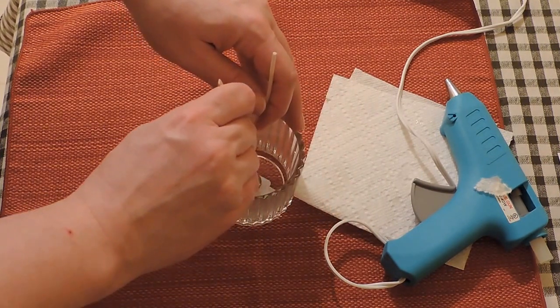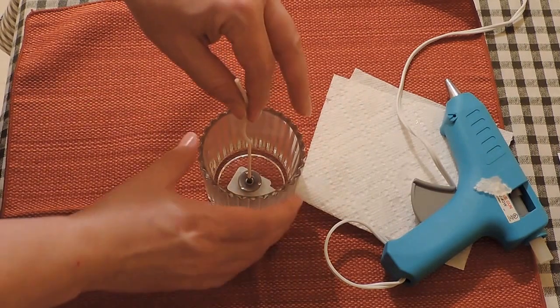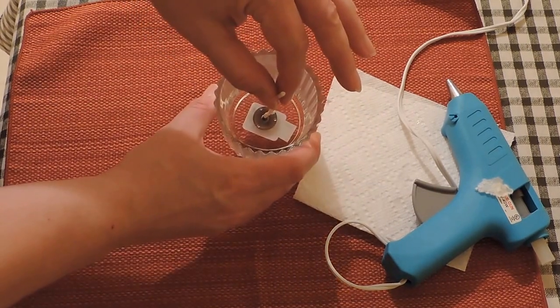After the wick is set, allow the jar to set for about five minutes to allow the glue to dry. Now you're ready to add your wax.